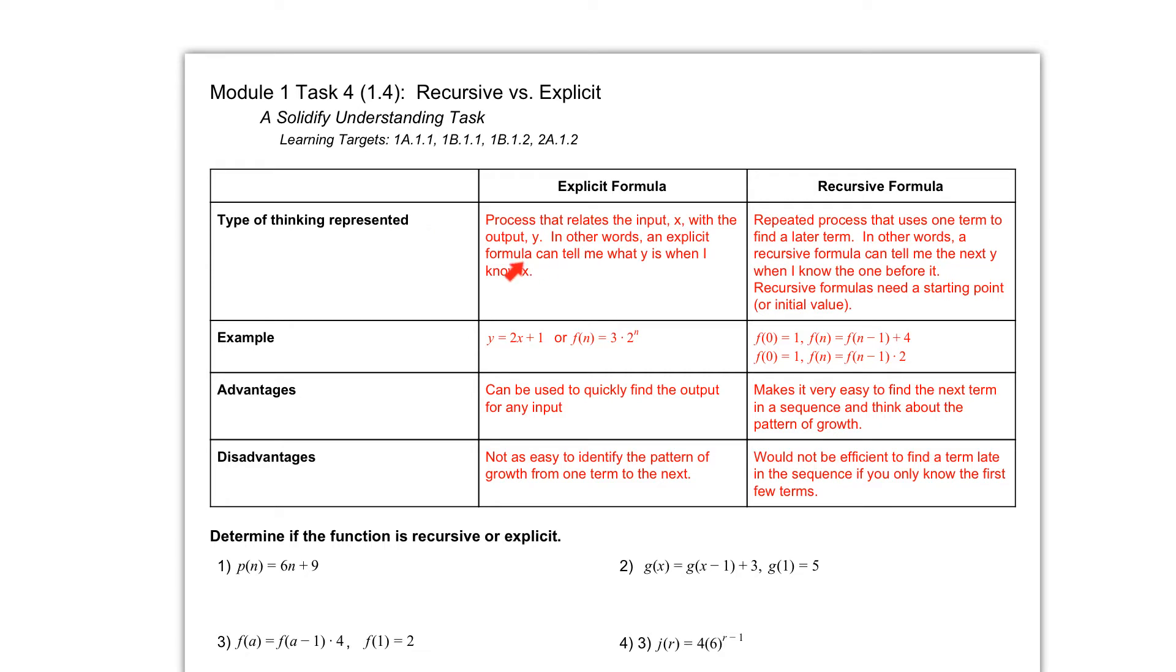In other words, an explicit formula can tell me what y is when I know x, and that's for any x. So I could pick an x that might be 4, I could pick an x that might be 100, and I can immediately just plug that in and figure out what the y value is that's related to it.